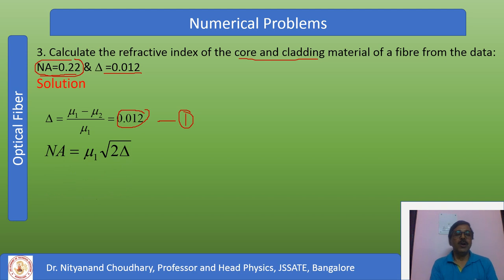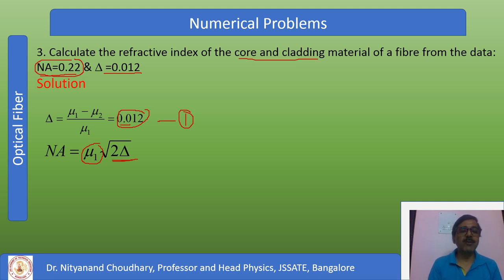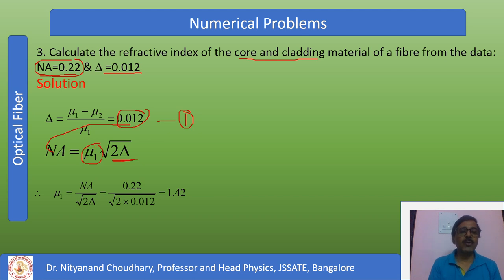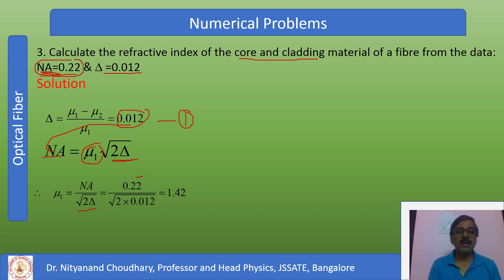In terms of fractional refractive index, NA = mu1 × sqrt(2 × delta). Rearranging, mu1 = NA / sqrt(2 × delta). Substituting NA = 0.22 and delta = 0.12, we calculate the refractive index of the core, which comes out to 1.42. So mu1 = 1.42 is equation number 2.